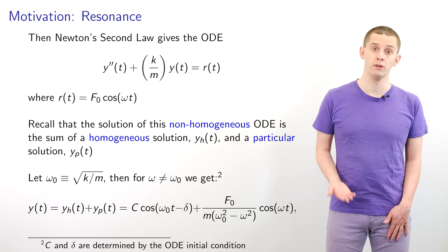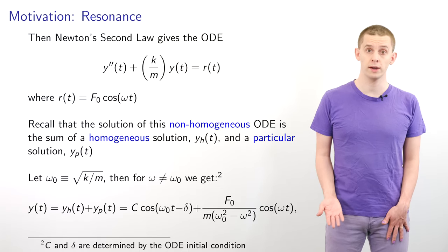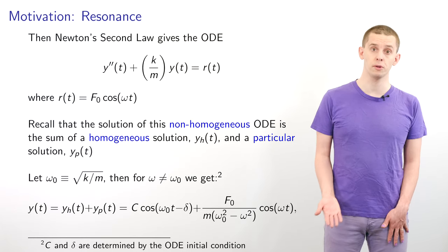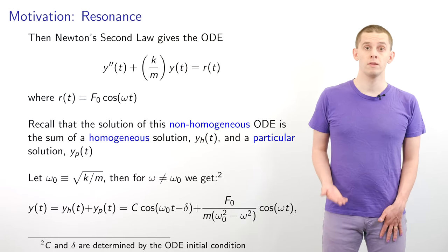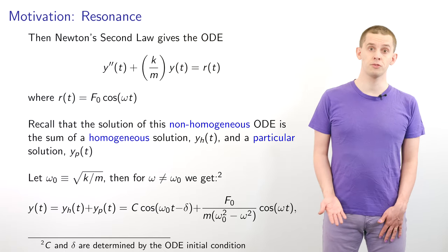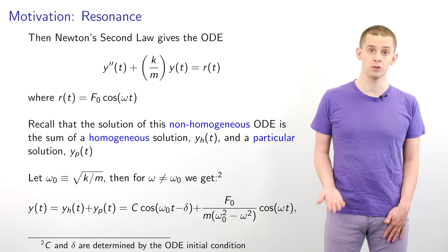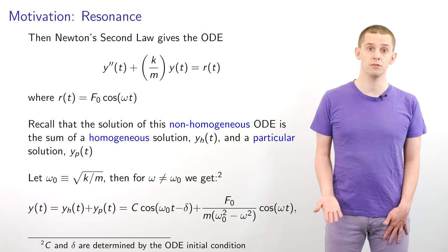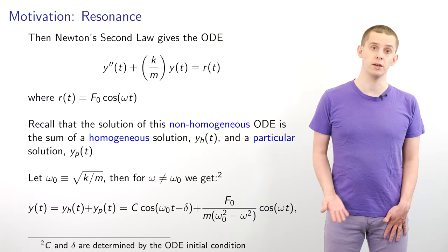We can recall that the solution to a non-homogeneous ODE like this can be written as the sum of a homogeneous solution y_h of t, where we set the right-hand side to zero, and a particular solution y_p of t, where we solve the full equation. Let's put omega_0 equal to the square root of k divided by m. Then if omega is not equal to omega_0, we can write that our solution y of t equals y_h of t plus y_p of t. Here y_h of t is equal to c times cosine(omega_0 t minus delta), where c and delta are free parameters. And our particular solution y_p of t is equal to f_0 times cosine(omega t) divided by m times (omega_0 squared minus omega squared).